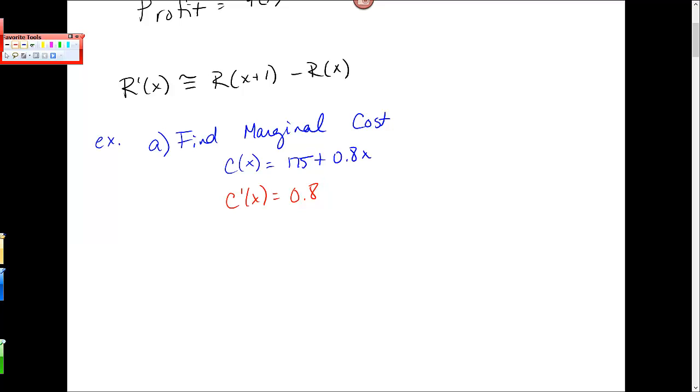So assuming this is in dollars, it means the cost... there's no x here, so this marginal cost is constant for all values of production. The marginal cost of producing one more unit at any production level is basically 80 cents.